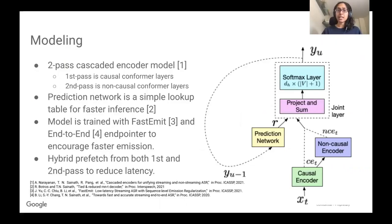The model we explore is a two-pass cascaded encoder model where the first pass runs some causal conformer layers and the second pass runs non-causal conformer layers. We replace a commonly used LSTM in the prediction network with a simple lookup table to help with latency. We also train the model with fast emit end-to-end end-pointer and use a hybrid prefetch from the first and second pass to improve latency.